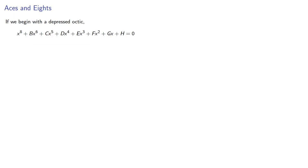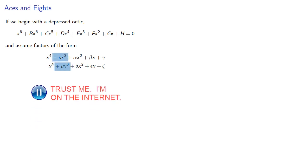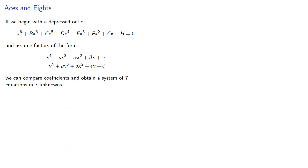So again, we'll begin with a depressed octet, one lacking the seventh degree term, and we'll assume factors of this form where, because their product doesn't have a seventh degree term, their cubic terms have to be equal and opposite. And we can compare coefficients and obtain a system of seven equations in seven unknowns.